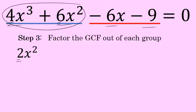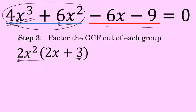Factoring a 2x squared out of those first two terms leaves you with 2x plus 3. If you factor 2x squared out of 4x to the third, you're left with 2x. And if you factor 2x squared out of 6x squared, 6 divided by 2 is 3, leaving you with 2x plus 3. Notice that 4x to the third plus 6x squared is exactly the same as 2x squared times 2x plus 3.